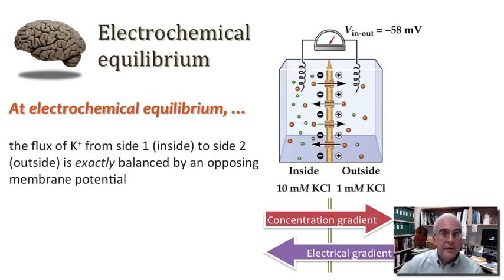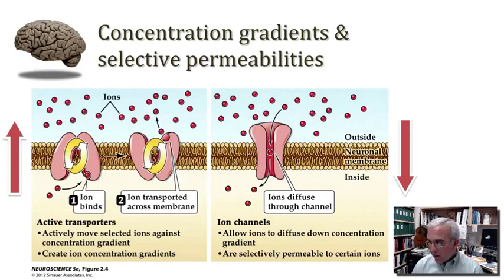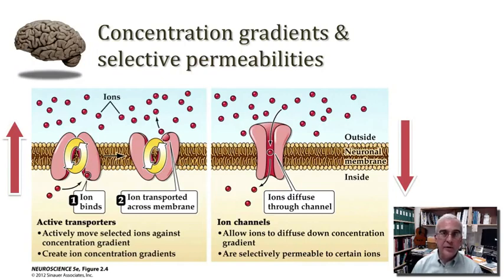Before we get to a more formal and quantitative approach, let's emphasize the key factors responsible for setting up this potential. The key factors needed for the generation of this bioelectrical potential are: first, a mechanism for establishing the concentration gradient, which happens via the activity of ion pumps and ion transporters. Second, there will be no membrane potential unless there is passage of ions through a permeability channel — that's where the ion channel comes in, allowing the membrane to be selectively permeable to a particular ionic species.